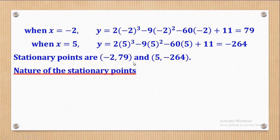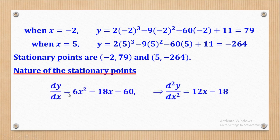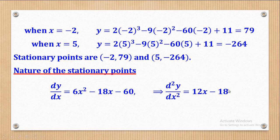Now to determine the nature of the stationary points — are they maximum, minimum, or points of inflection? For that, I get the second derivative. Differentiating 6x² gives 12x; differentiating −18x gives −18; and −60 is a constant so it differentiates to 0. So d²y/dx² = 12x − 18.